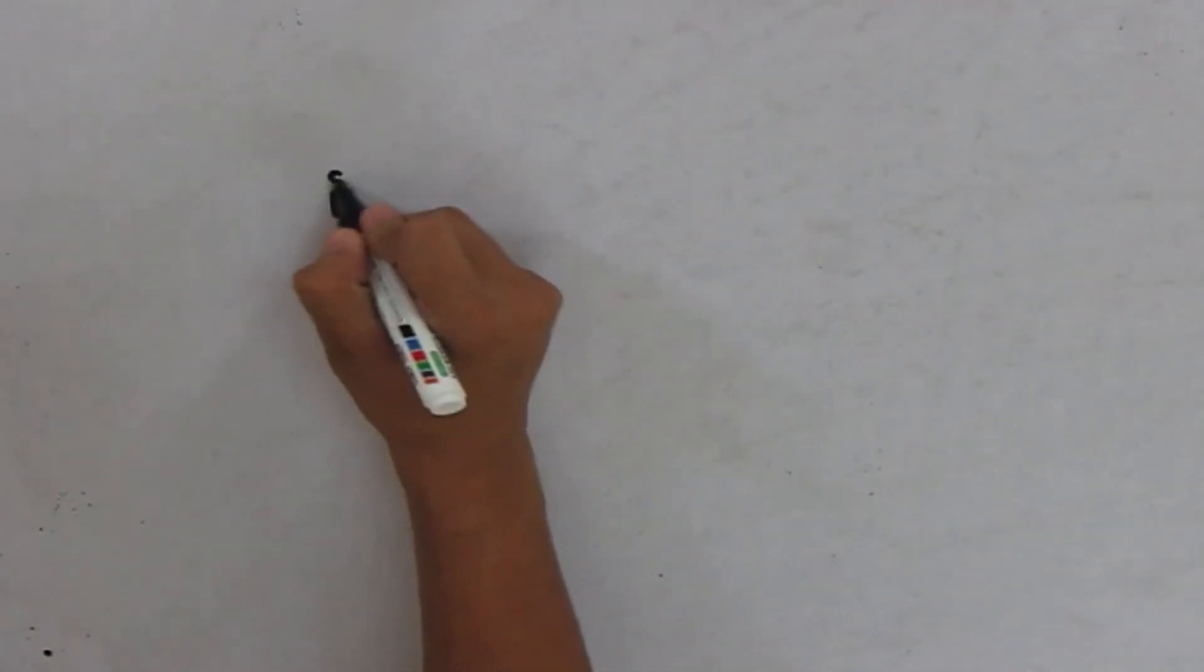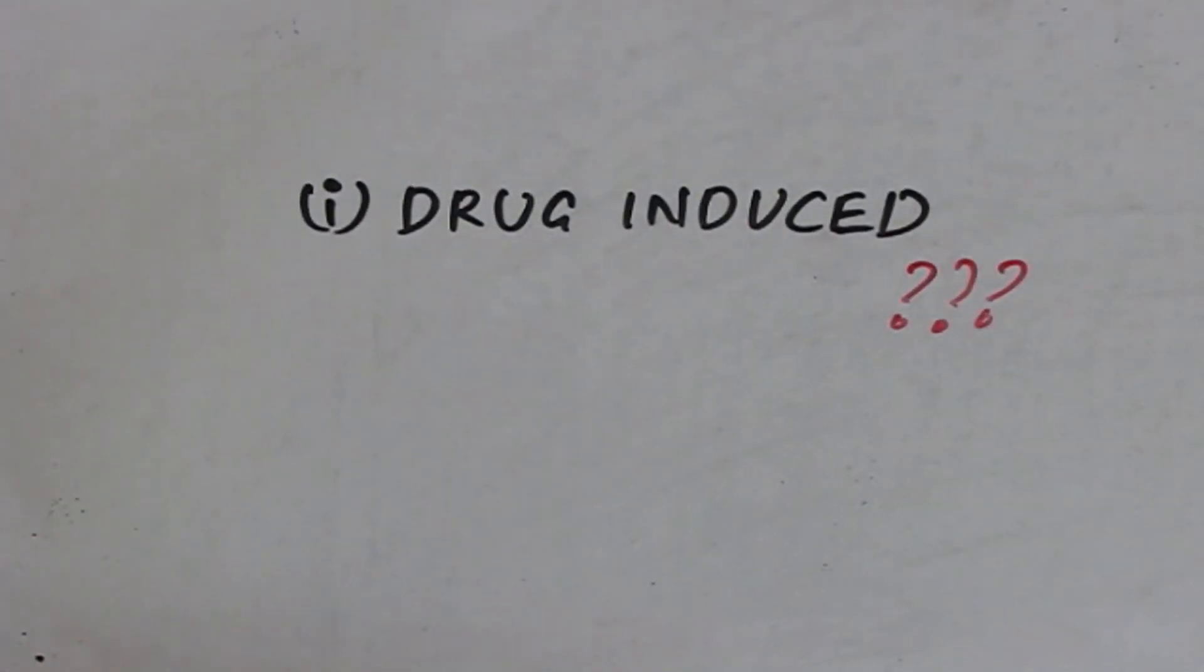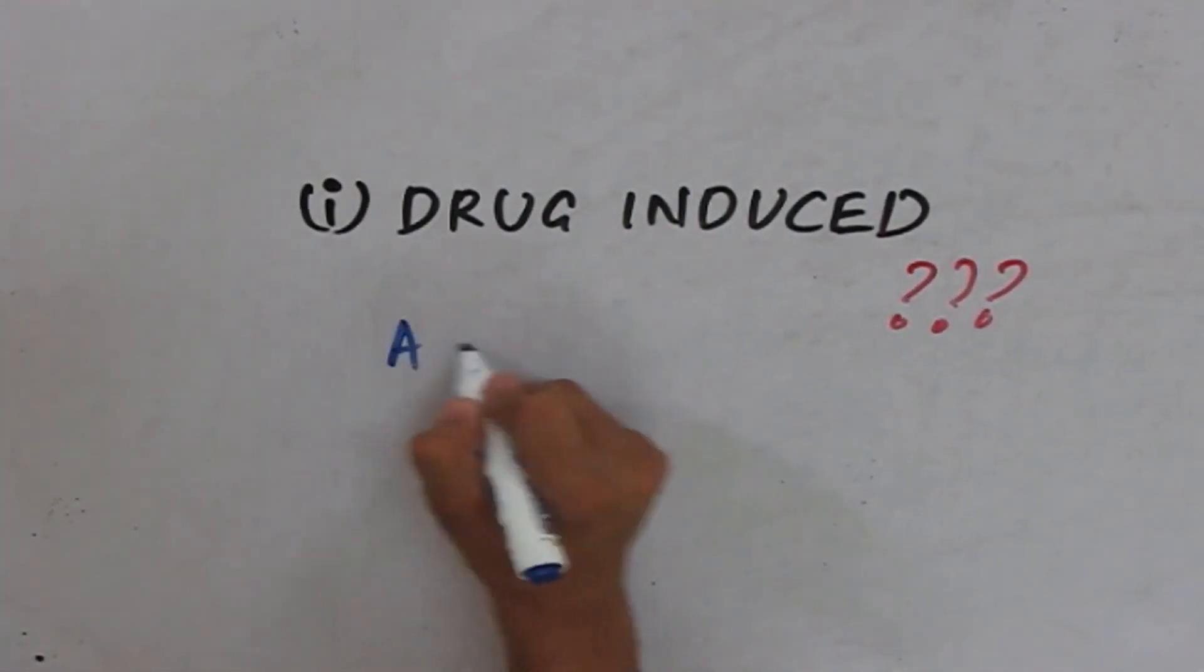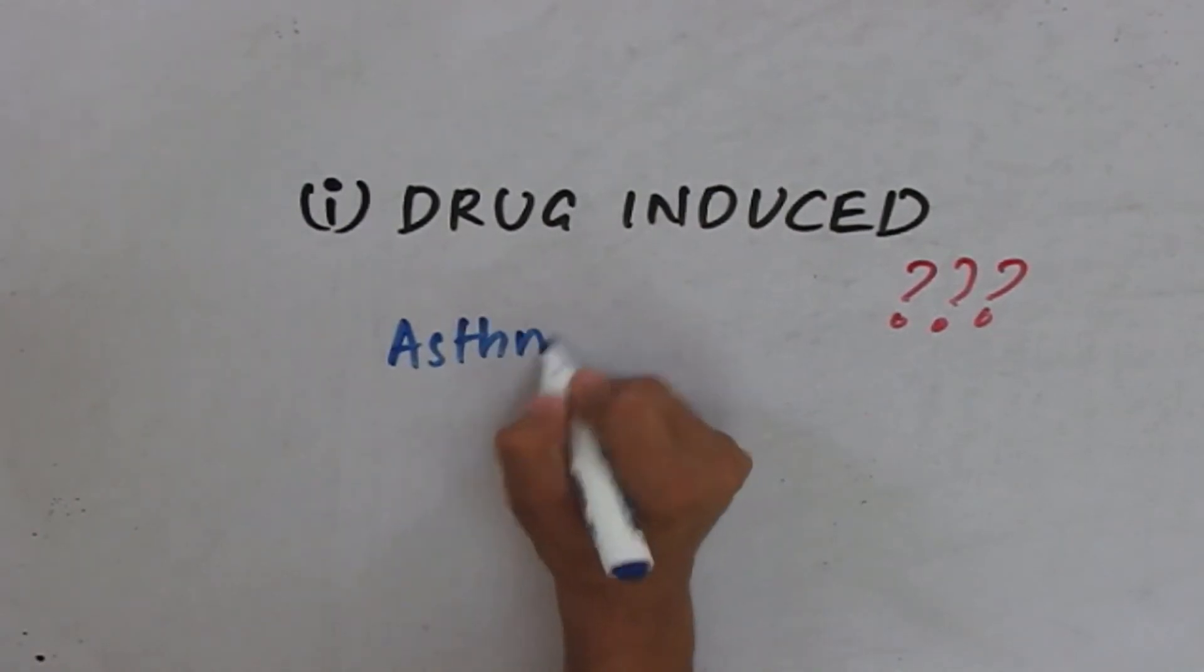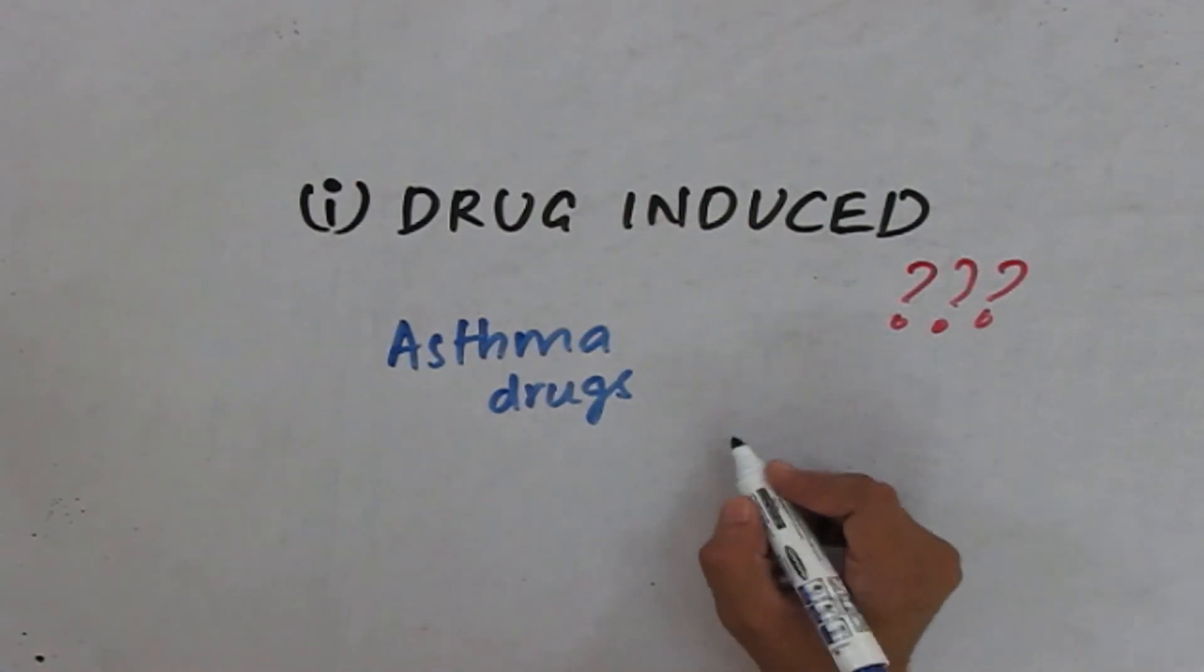Now I will be explaining you two types of asthma. The first one is drug-induced asthma. So, what is drug-induced asthma? Drug-induced asthma is the asthma which is usually seen after drugs are taken. The usual drugs which are found to induce asthma are aspirin and other NSAIDs.